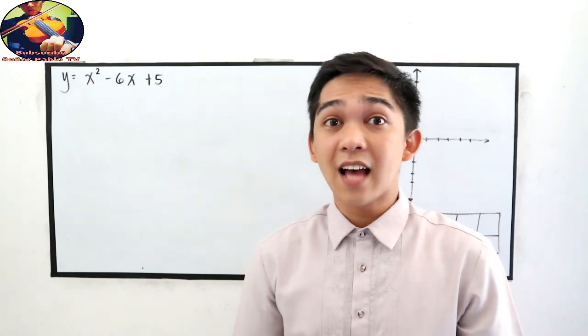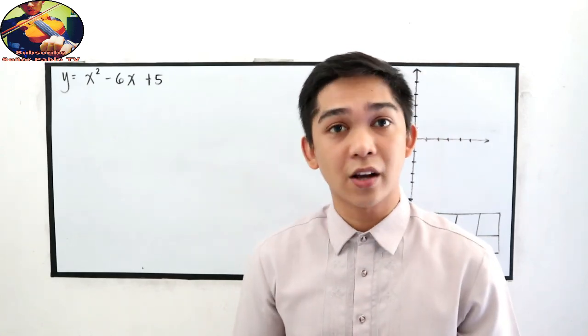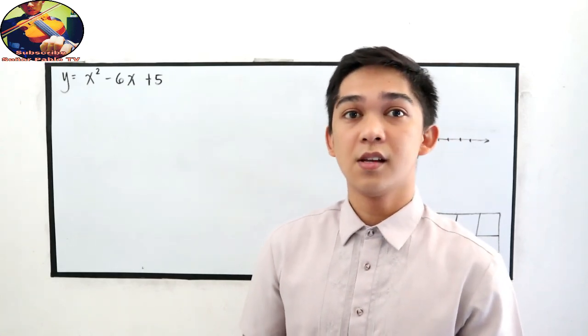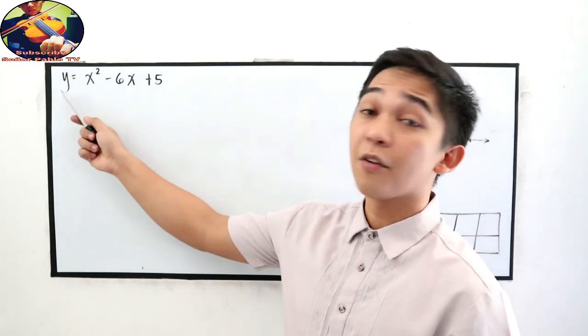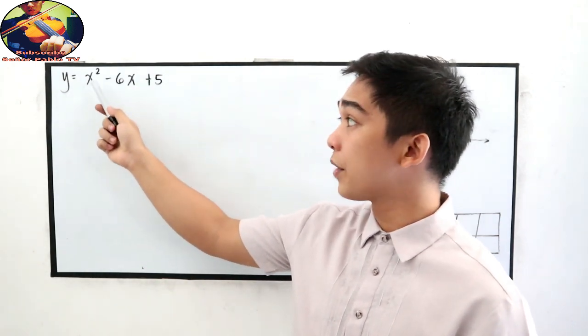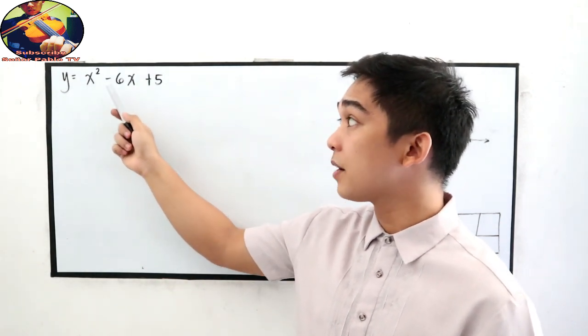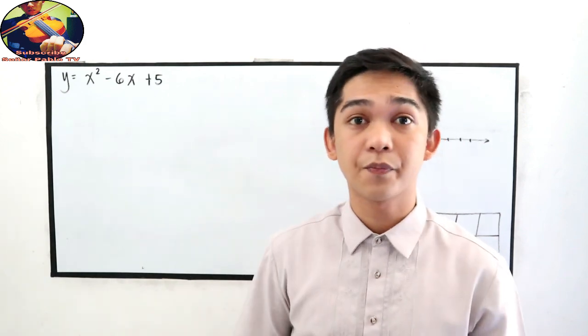In this lesson, we will discuss how to graph a quadratic function. Let's say we have f(x) or y is equal to x squared minus 6x plus 5.